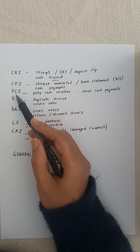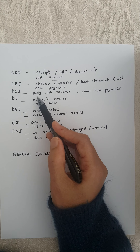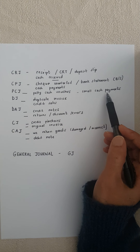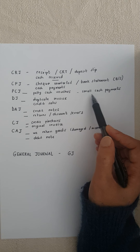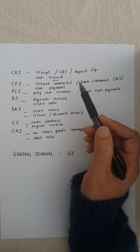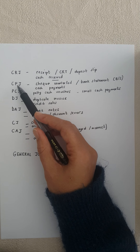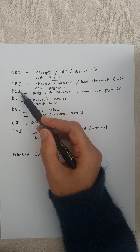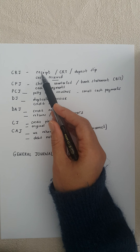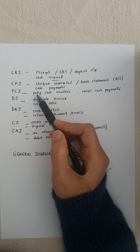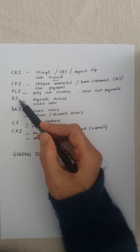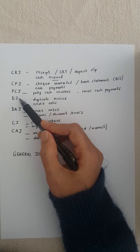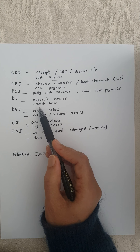Then we have a petty cash journal where we use petty cash vouchers and we record small cash payments. They are too small or insignificant to put into the CPJ, so we put them into the petty cash journal. Those are the cash transactions. Then we move on to credit transactions where we have a debtors journal.